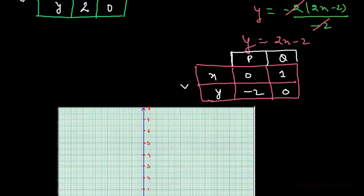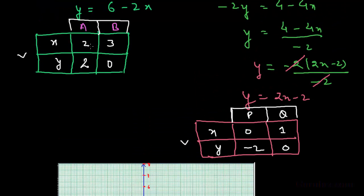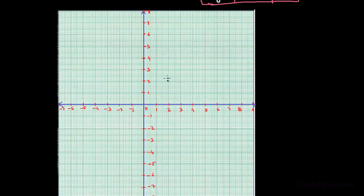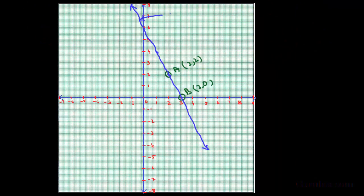Now we plot both tables on the graph paper. From the first table, point A is (2, 2) and point B is (3, 0). We plot these and draw a straight line through them. This line represents 2x + y − 6 = 0.